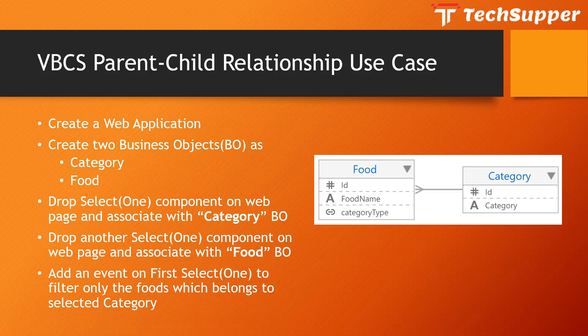For example, in the first dropdown we will have all the categories like fruits, vegetables, and nuts. In the second dropdown we will filter out all the fruits if we selected fruits. If we select nuts then we'll show all the nut names in the second dropdown. If we select vegetable then we will show all the vegetable names in the second dropdown. Let's see how we can achieve this in VBCS.